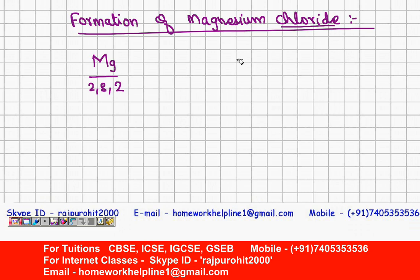Chloride — that is chlorine, that is Cl — its electronic configuration is 2, 8, 7. This is the electronic configuration of Cl.